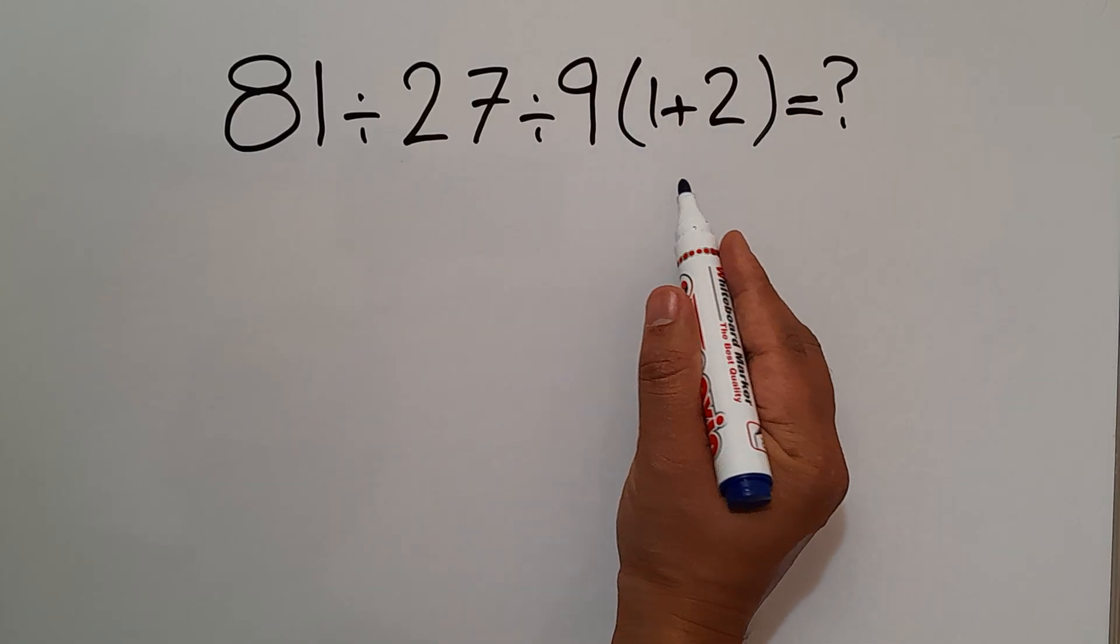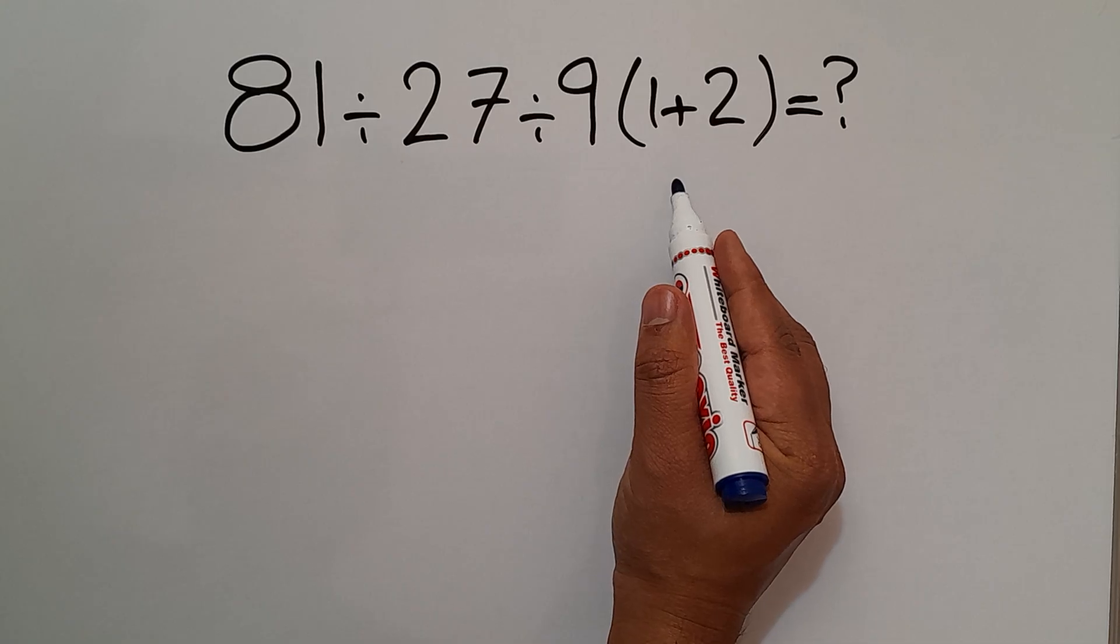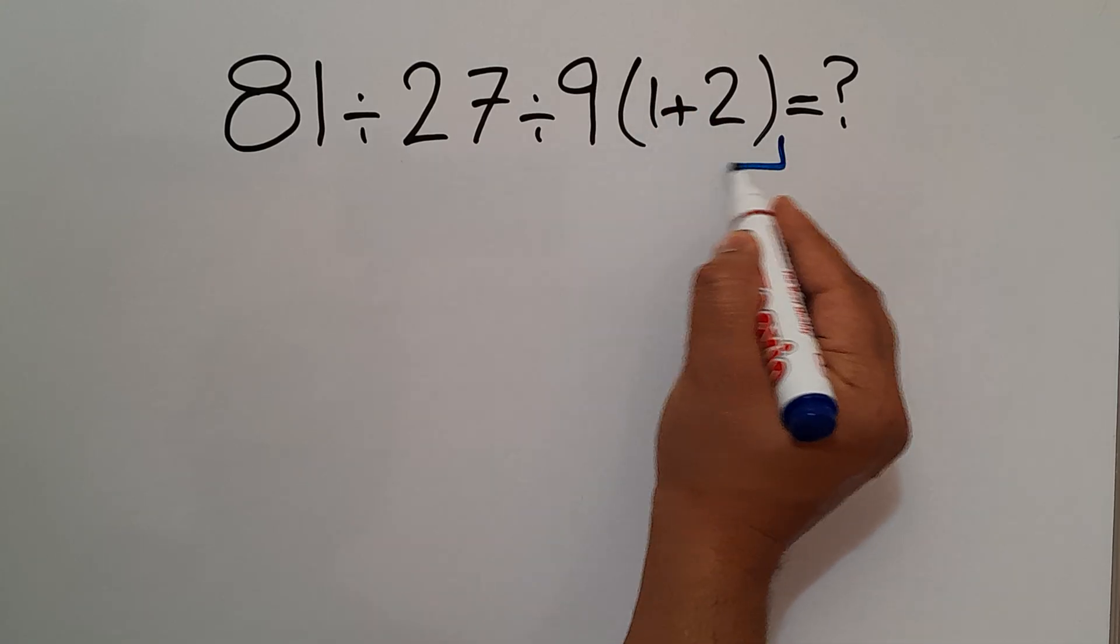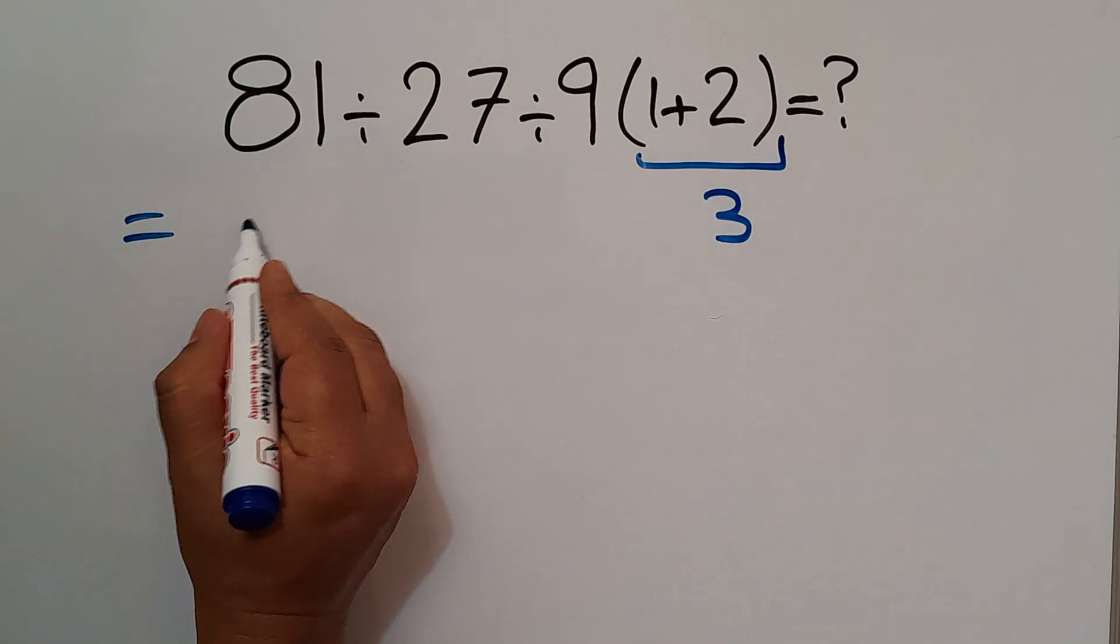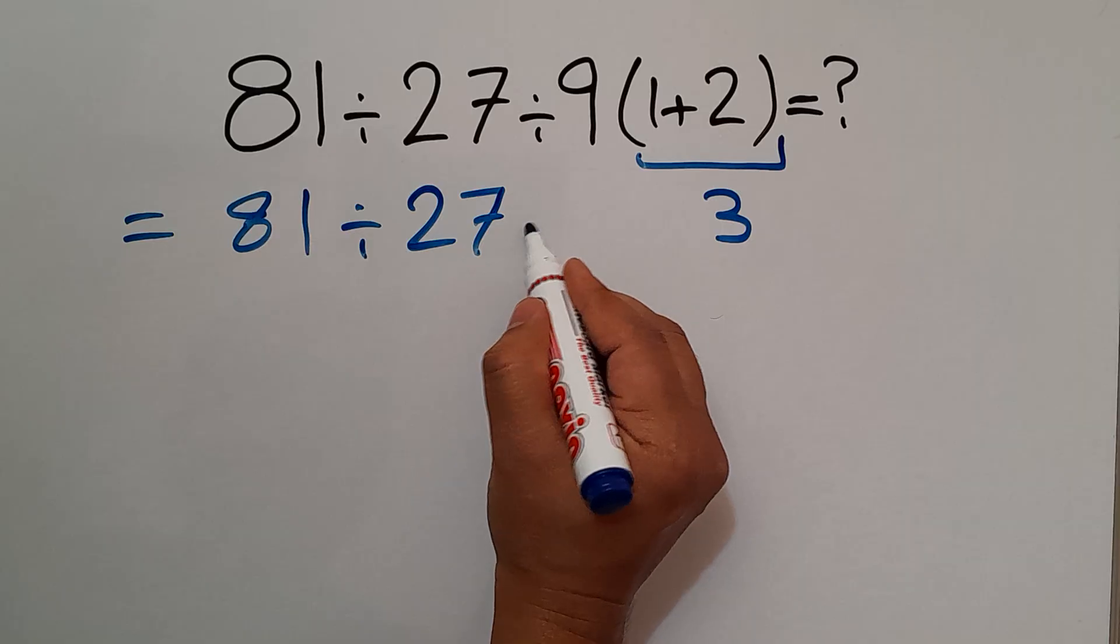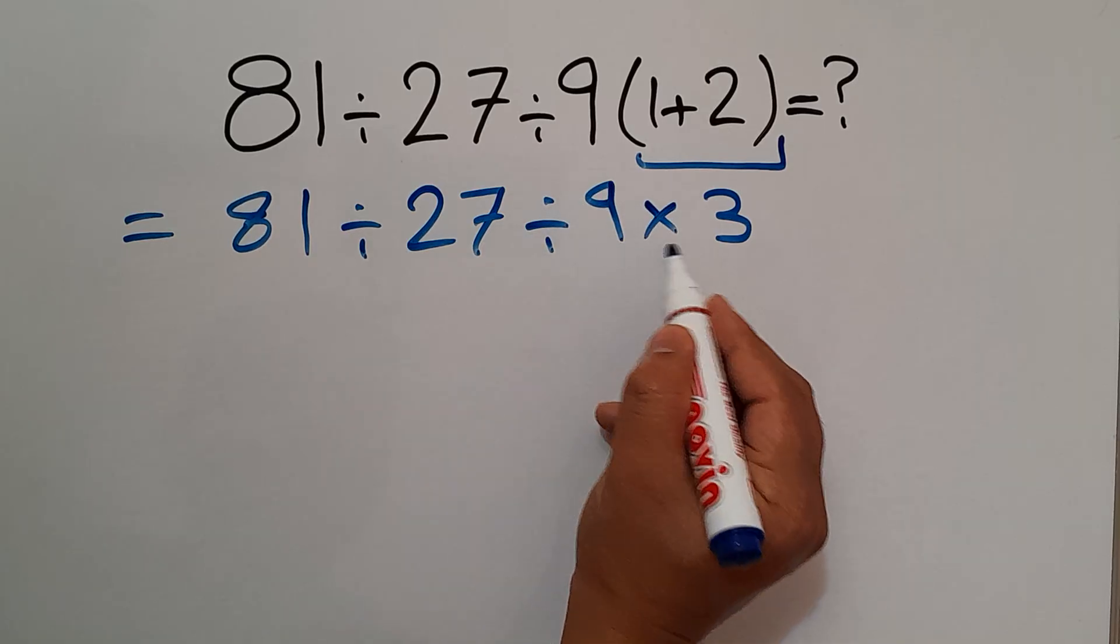As we know parentheses has higher priority than other operations. So first we do these parentheses, 1 plus 2 equals 3. So we have 81 divided by 27 divided by 9 then times 3.